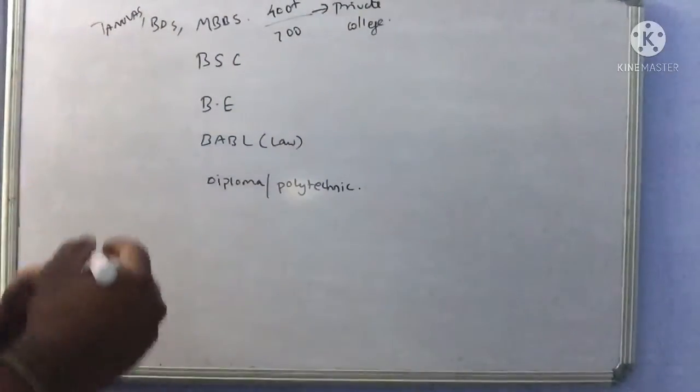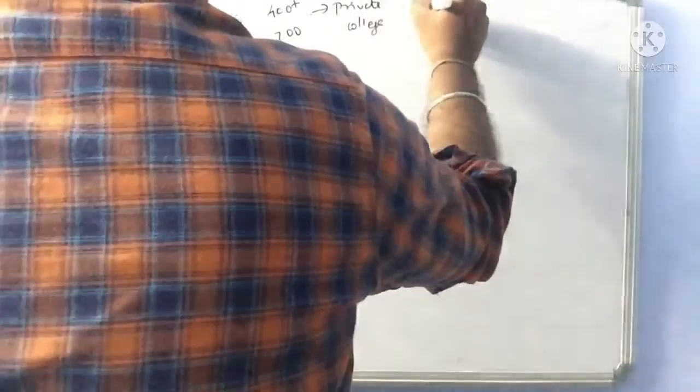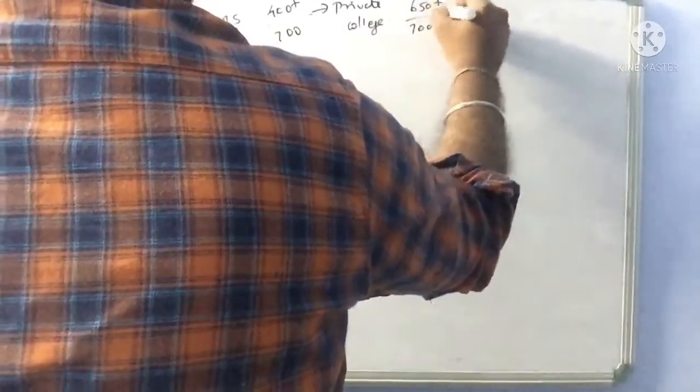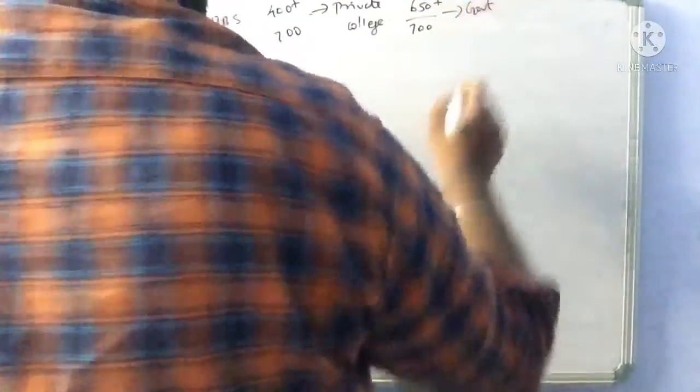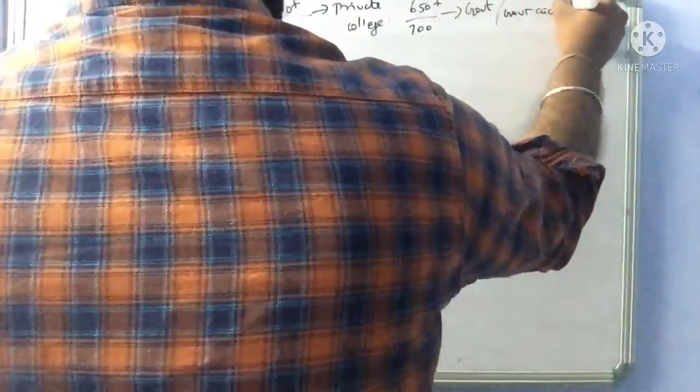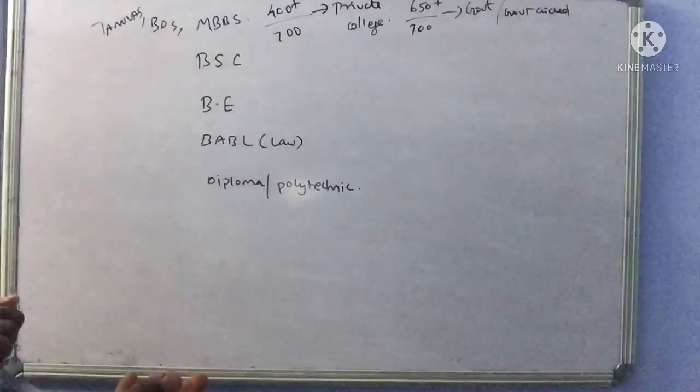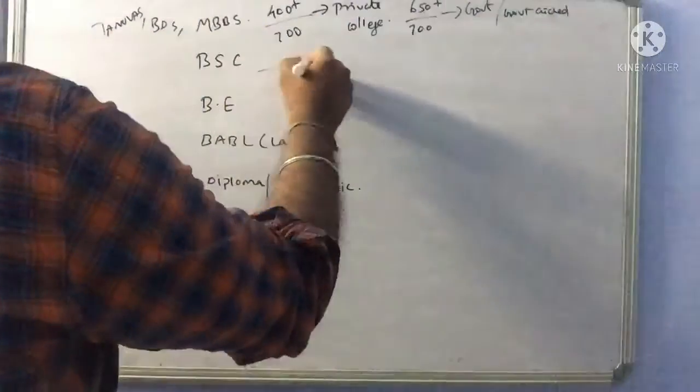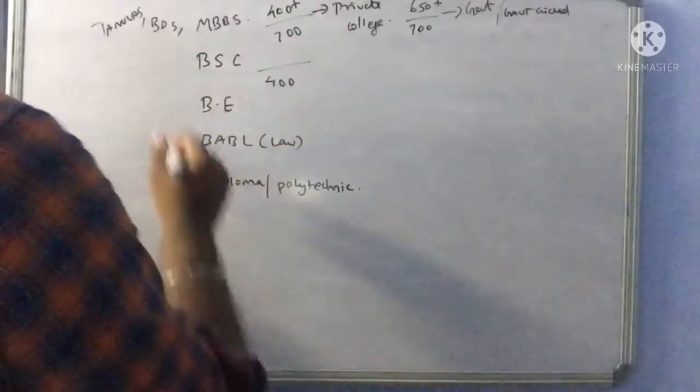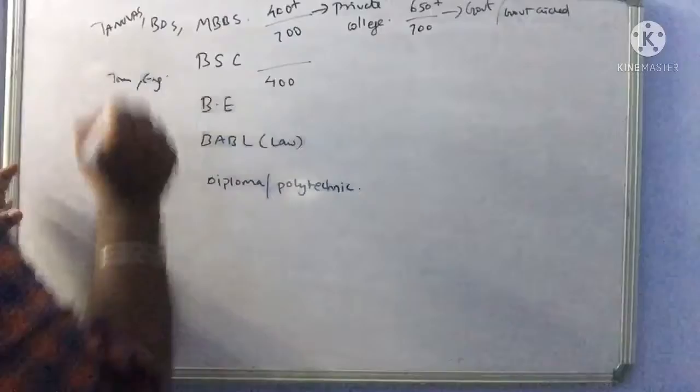The doctor is not a doctor. In the 60s, it is confirmed that it is a government card and government-aided card. This is the 12th mark for admission. BSC is $4.00, that is Tamil English. There are 4 subjects.